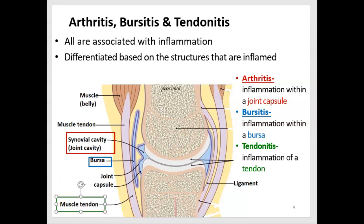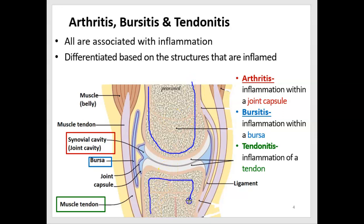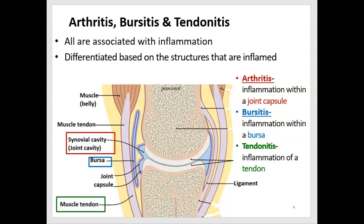Looking at a picture of a joint, we have two bones. A ligament keeps the bones together. Between the two bones is a membrane called the synovial membrane, which covers the ends of the bones and forms a capsule. The space between the bones is called the synovial cavity. This is where arthritis takes place — the synovial cavity becomes inflamed, causing swelling and pain.